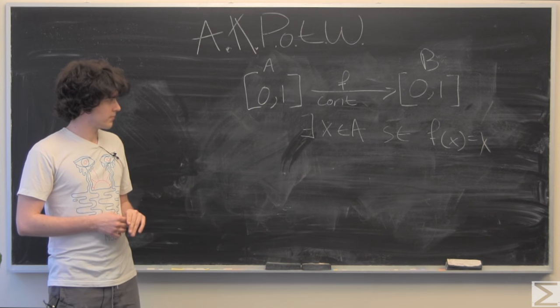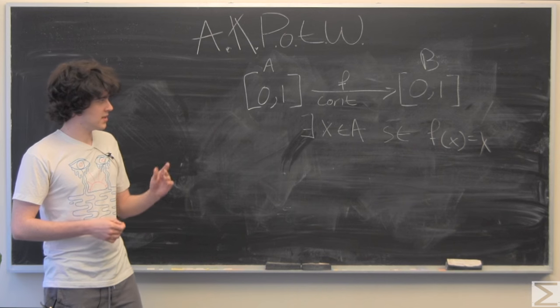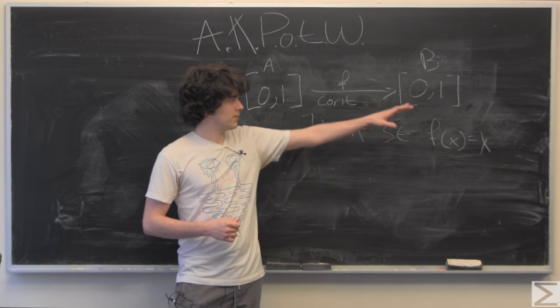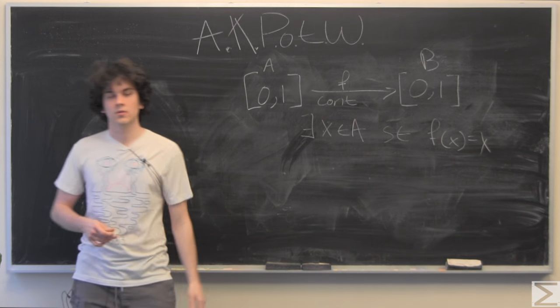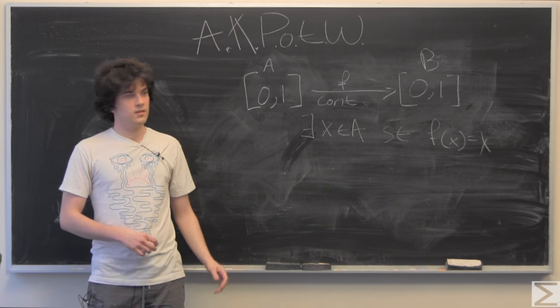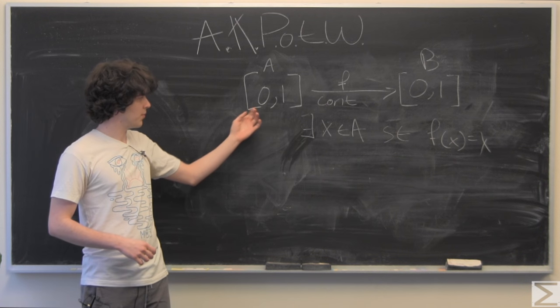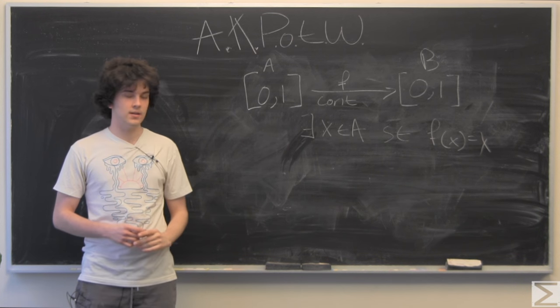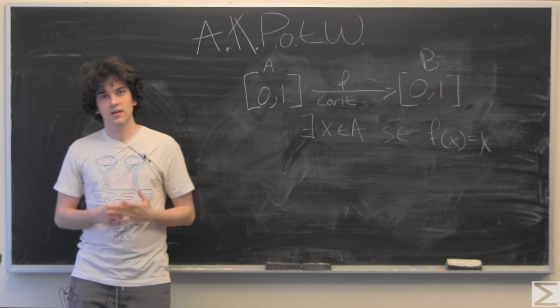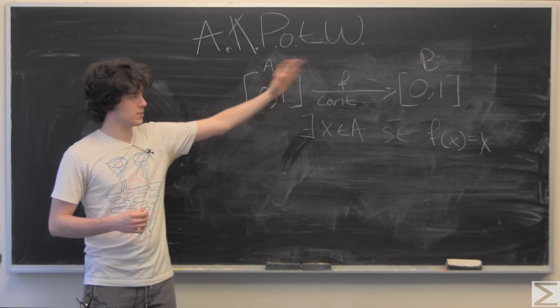So that states that if you choose any point in your image, there exists some point in your preimage such that f of this equals that.